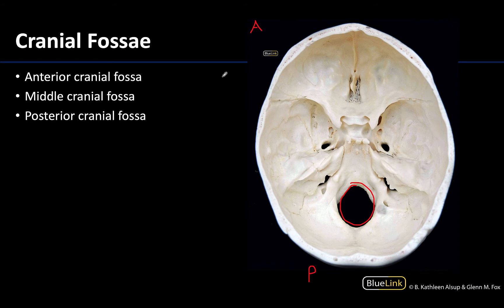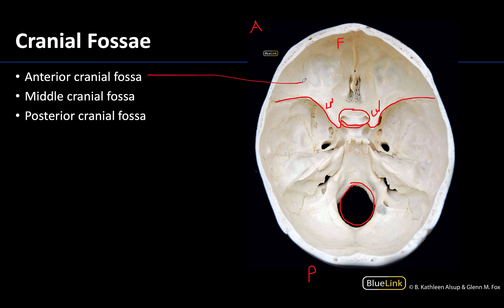The anterior cranial fossa spans from the frontal bone — specifically the squamous portion or anterior flattened portion — back to the lesser wings of the sphenoid. The lesser wings are right here, and this whole area is considered part of the anterior cranial fossa. There are some differences between resources about whether this medial-most portion is included within the anterior cranial fossa or the middle, but for our purposes we do include this portion in the anterior cranial fossa.